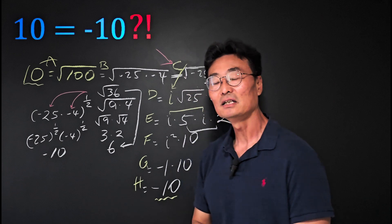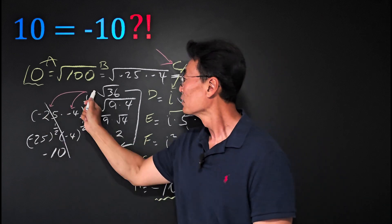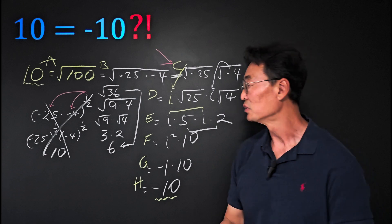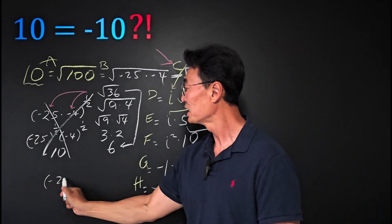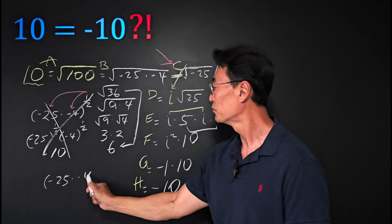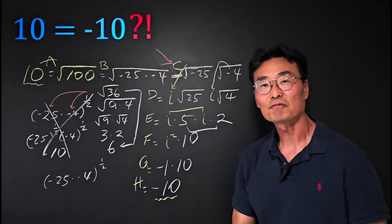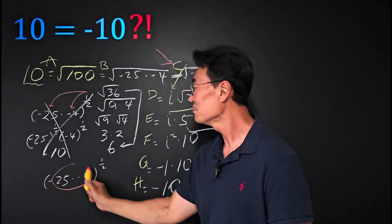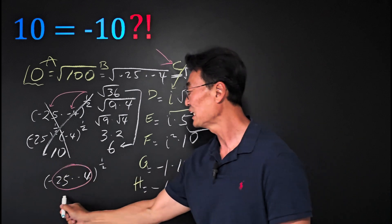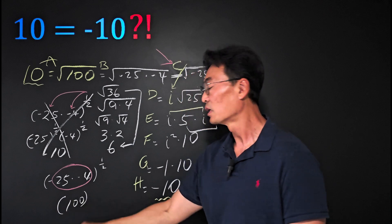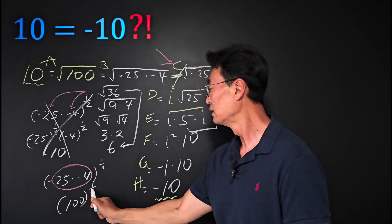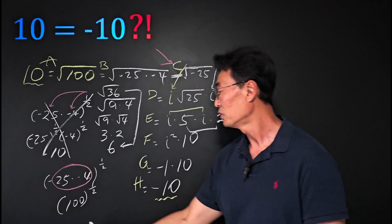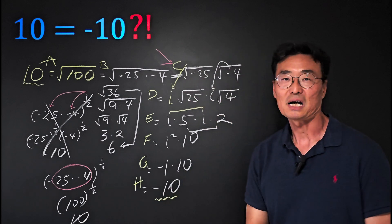What we need to do instead is, given negative 25 times negative 4 all to the half power, following the order of operations, we need to take care of what's inside the parentheses first and change that into 100, then take the half power, which equals positive 10.